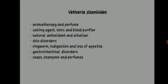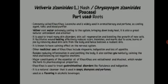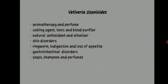To tell you in brief: Vetiveria zizanioides is used in aromatherapy and perfume, as a cooling agent, tonic, and blood purifier. It is a natural antioxidant and alkalizer, used for skin disorders, against ringworm, indigestion, loss of appetite, and gastrointestinal disorders like flatulence. It is also used as a natural cleanser in soaps, shampoos, and perfumes. It belongs to Poaceae and the part used is roots.